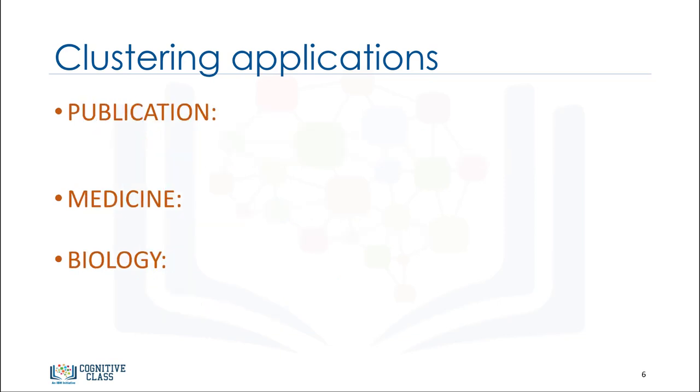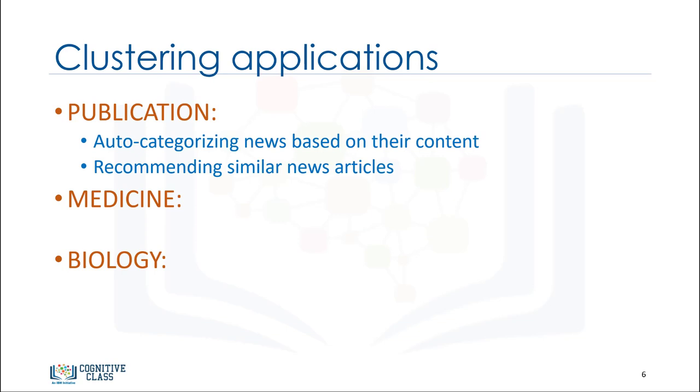In publication media, clustering is used to auto-categorize news based on its content, or to tag news, then cluster it so as to recommend similar news articles to readers.